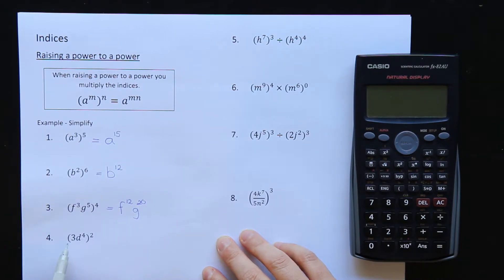If there is a big number at the front of my coefficient, I have to do whatever this power is. It's squared. I have to square that number. Okay, don't times it. Don't do 3 times 2. I have to do 3 squared. 3 squared is 9. 3 times 3 is 9. And then I can do my coefficient here. D is the base times the powers. 4 times 2 is 8.